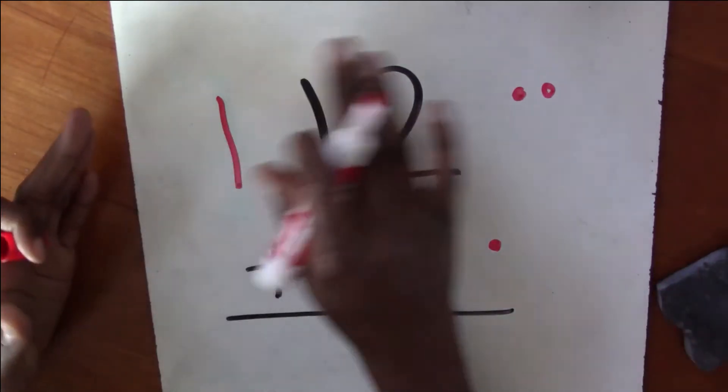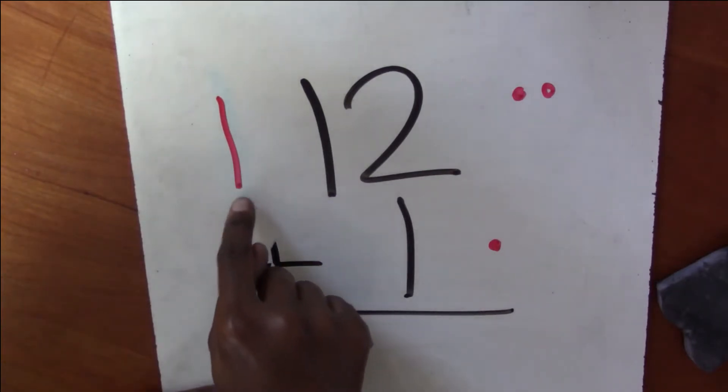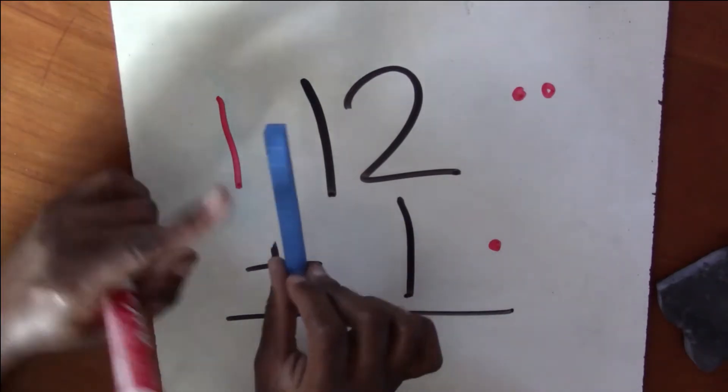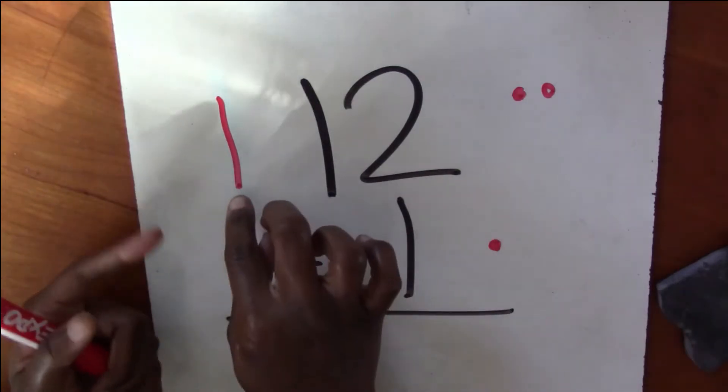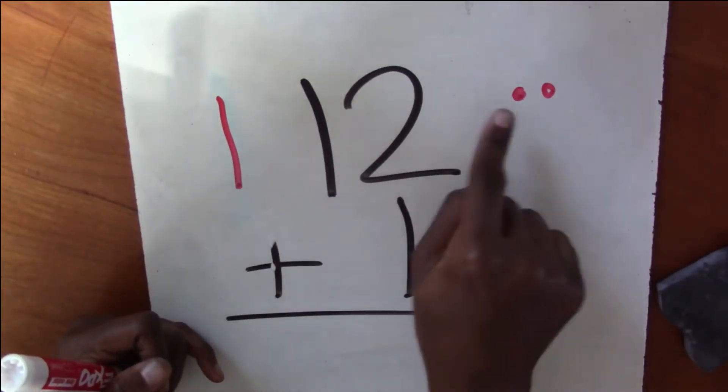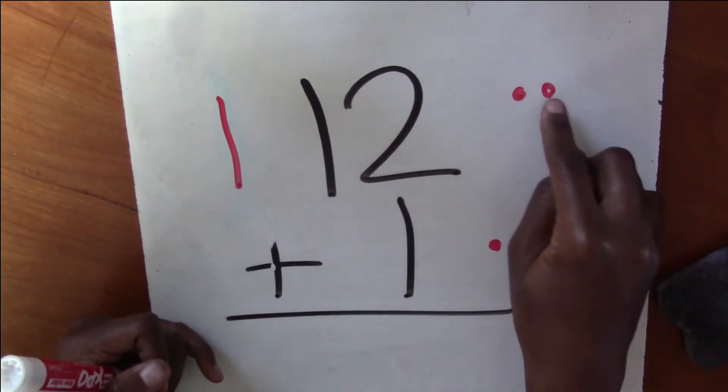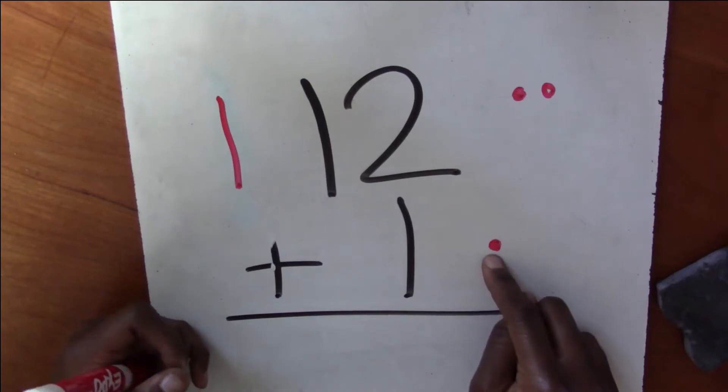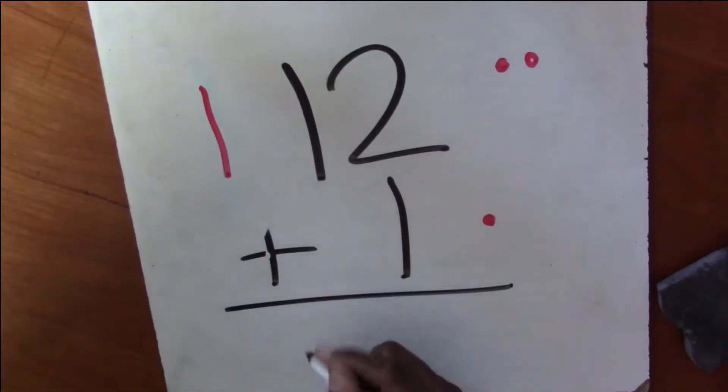Now we're going to count up all of our 10 sticks to get our answer. Let's count. So remember, this stick equals 10. So we're going to count on from 10. Remember, this is just one. So it's just one more than 10. 10, 11, 12, 13. What's our answer? Excellent job. Our answer is 13.